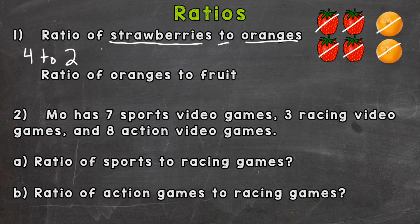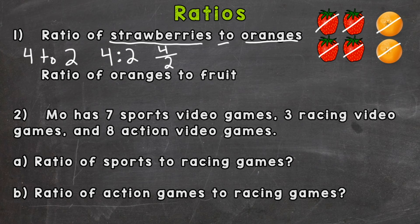Four to two is one way we can write a ratio. We can also use a colon: four colon two, meaning four strawberries to two oranges. Or we can use a fraction: four over two. Whatever comes first is your numerator — the top number — and whatever comes second is your denominator.